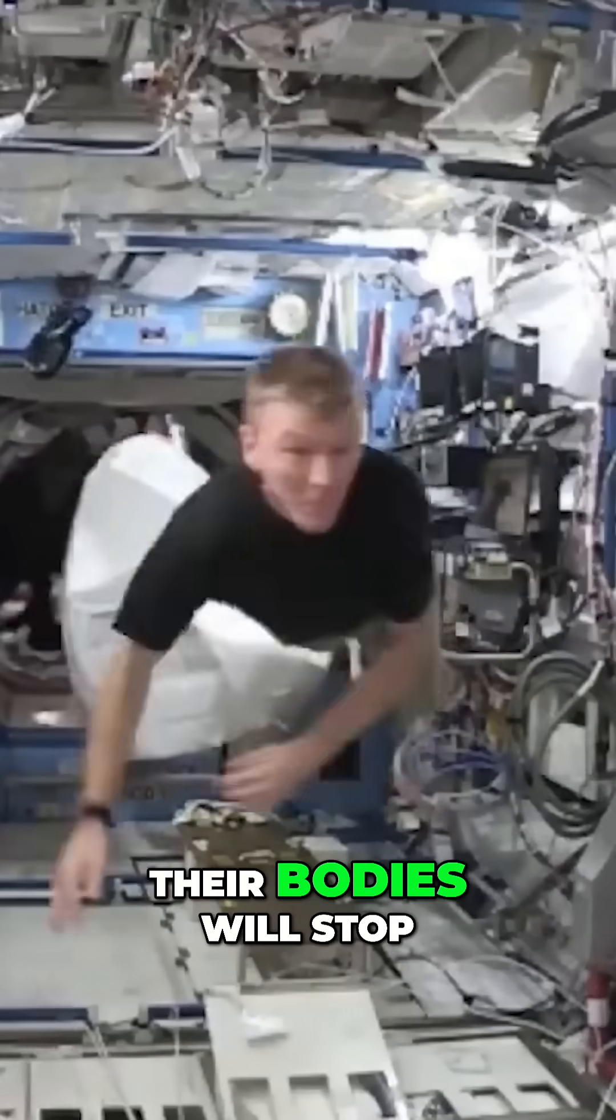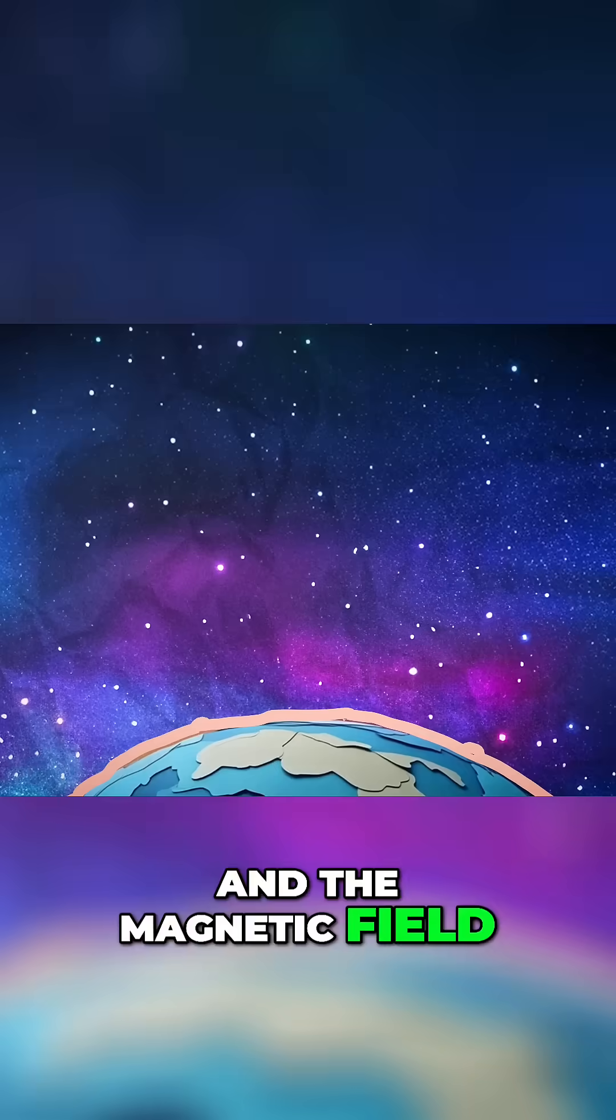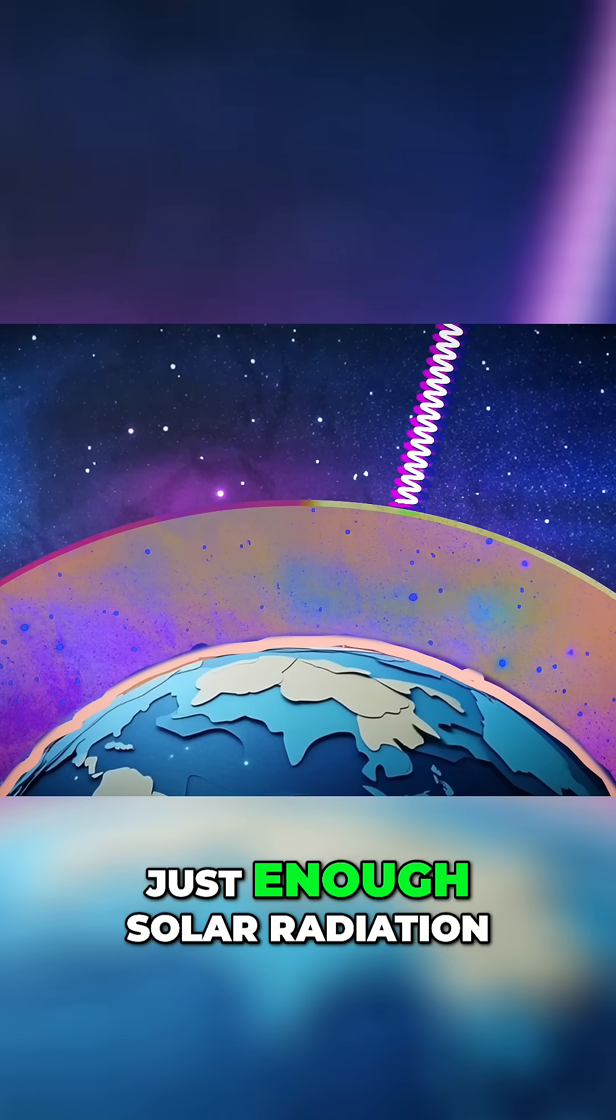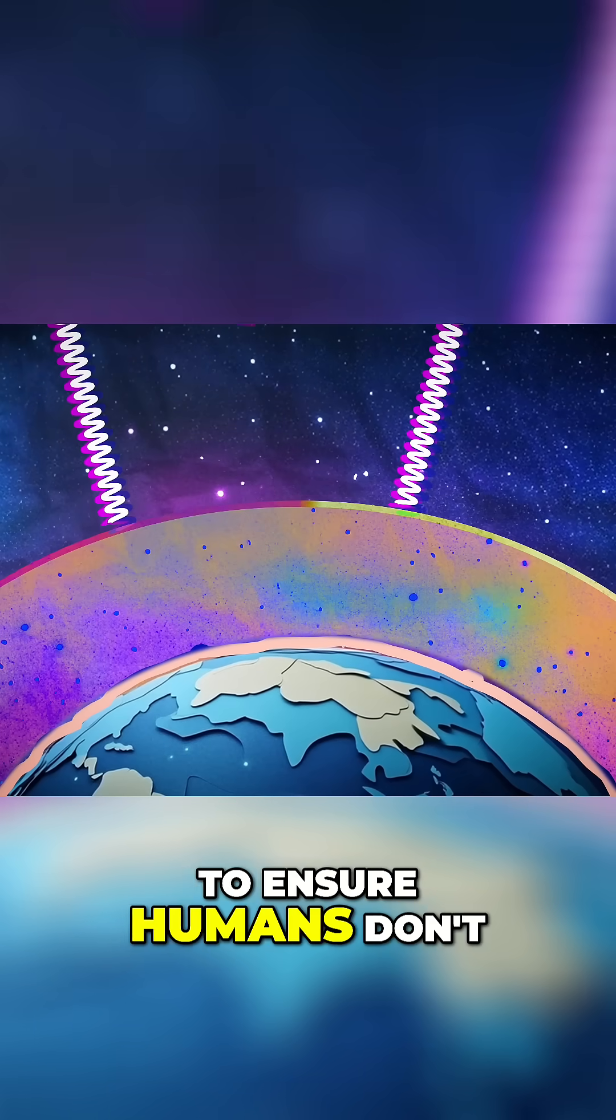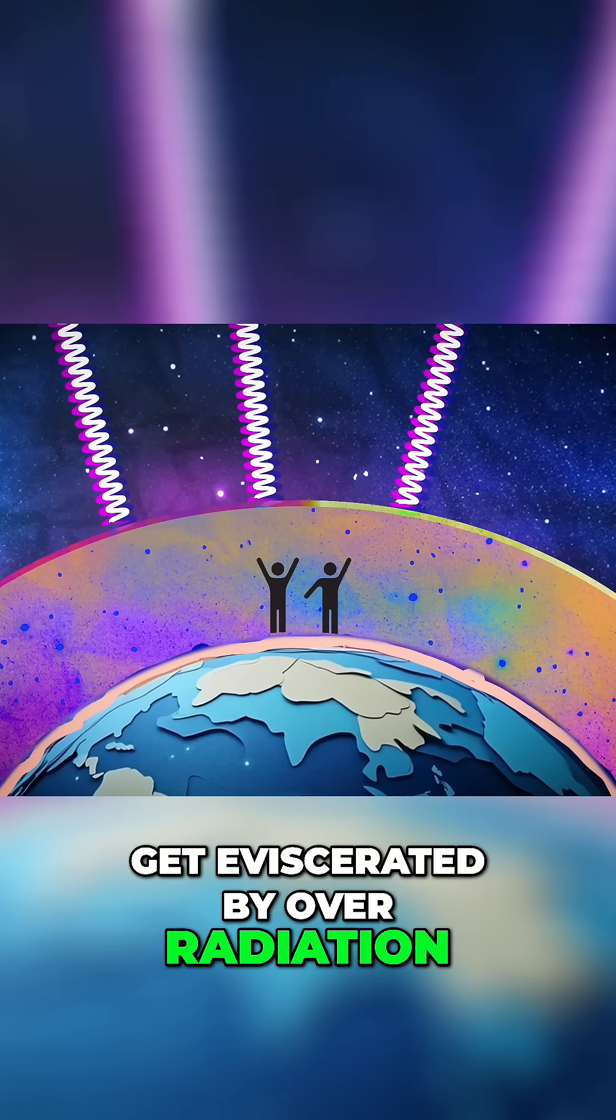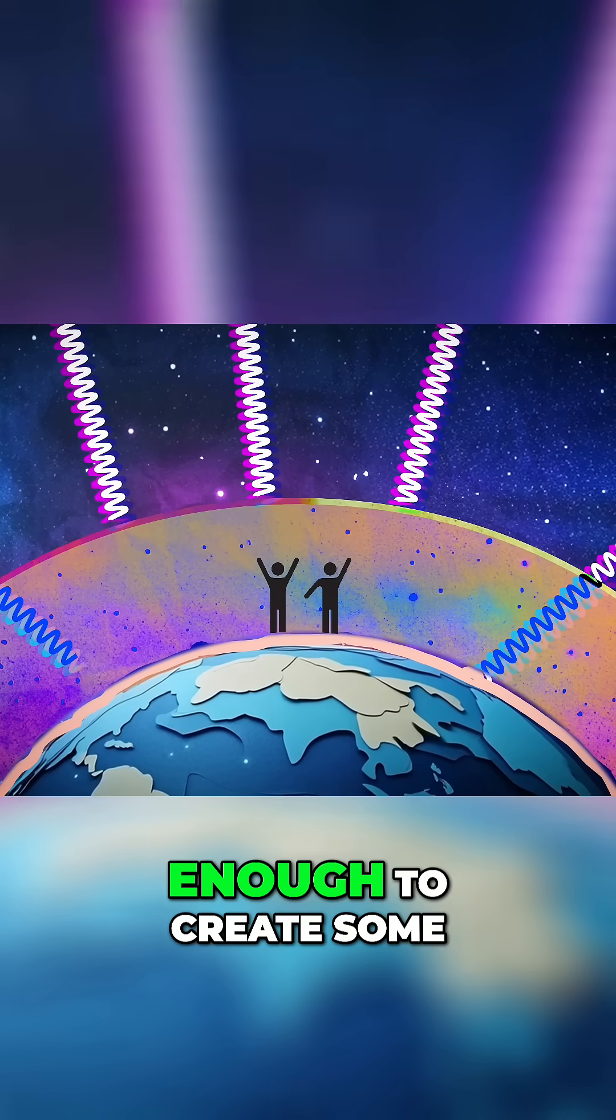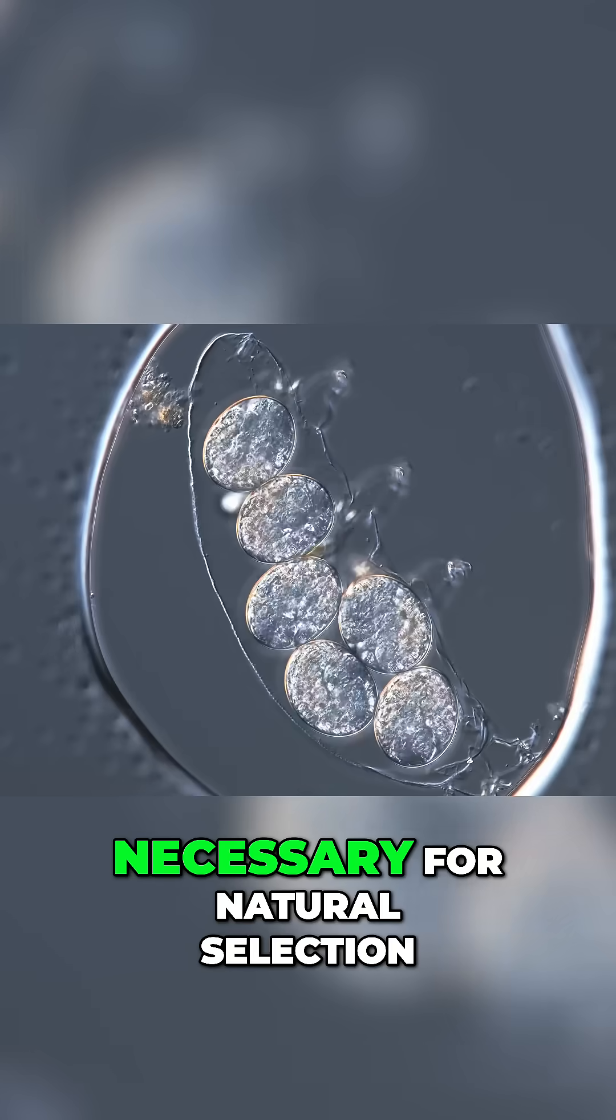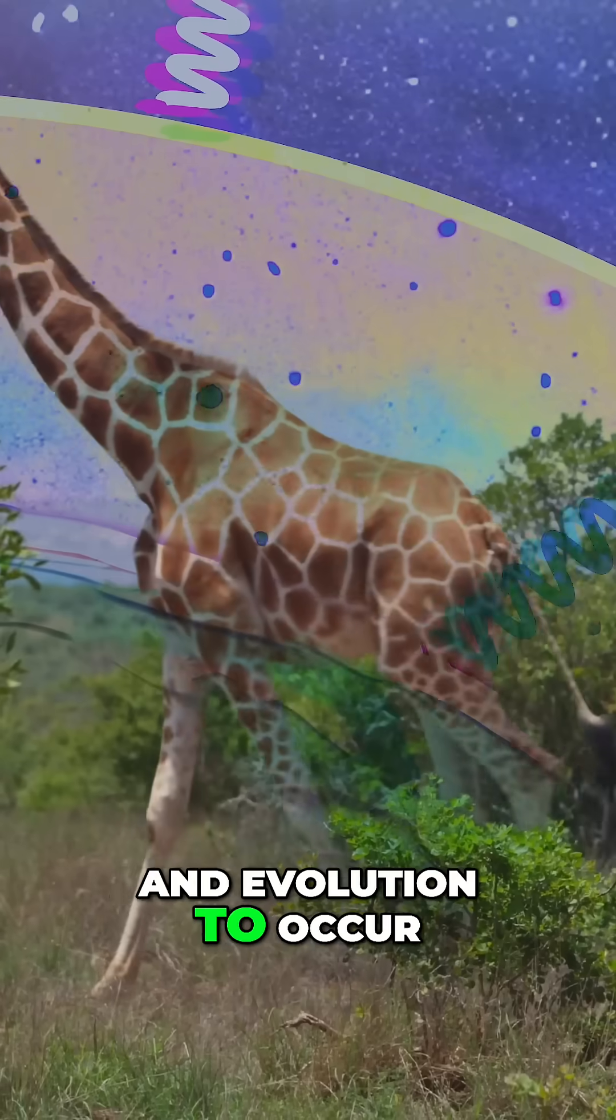And the magnetic field of the Earth blocks just enough solar radiation to ensure humans don't get eviscerated by over-radiation, but lets in just enough to create some of the genetic mutations necessary for natural selection and evolution to occur.